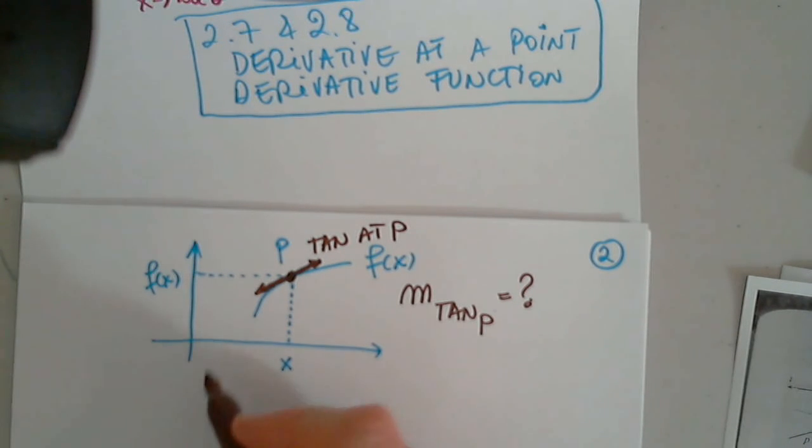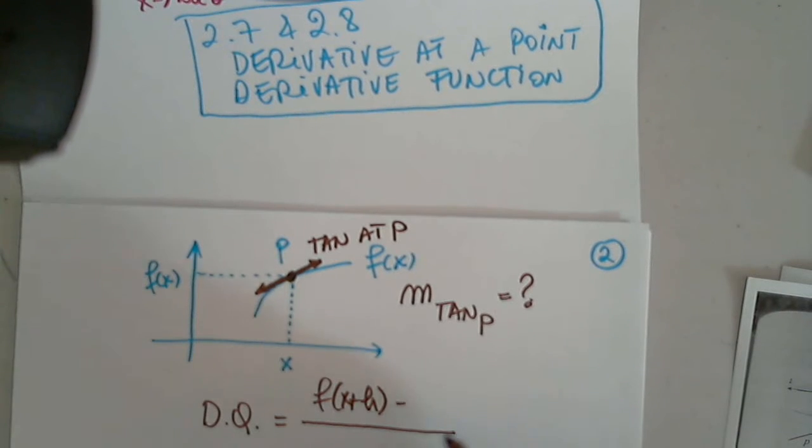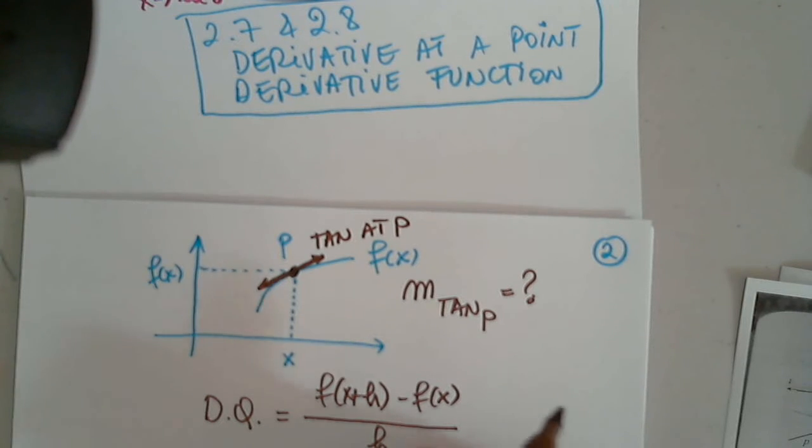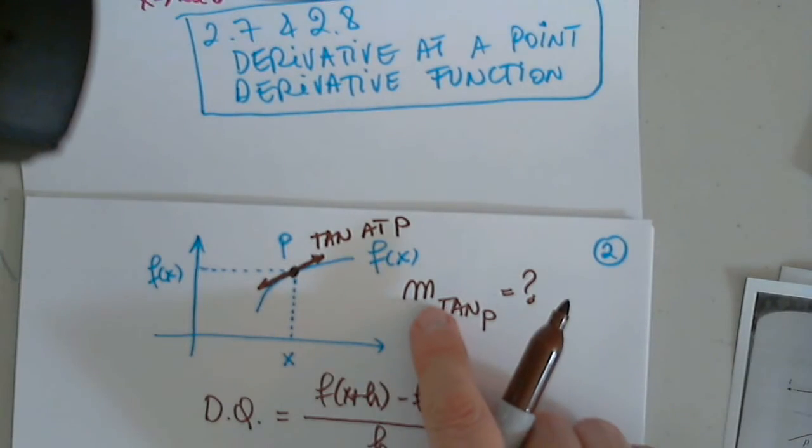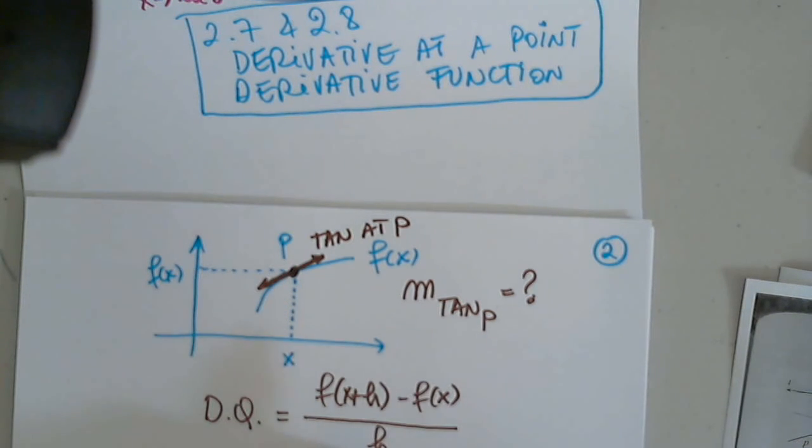What we did in the past, we looked at the difference quotient. Anyone would like to tell us the difference quotient? f of x plus h minus f of x over h. Very good. Awesome. So what was this? This was almost the slope of this line, right? Because we said h is small. So the difference quotient is approximately the slope of the tangent line at P. It's not exactly.